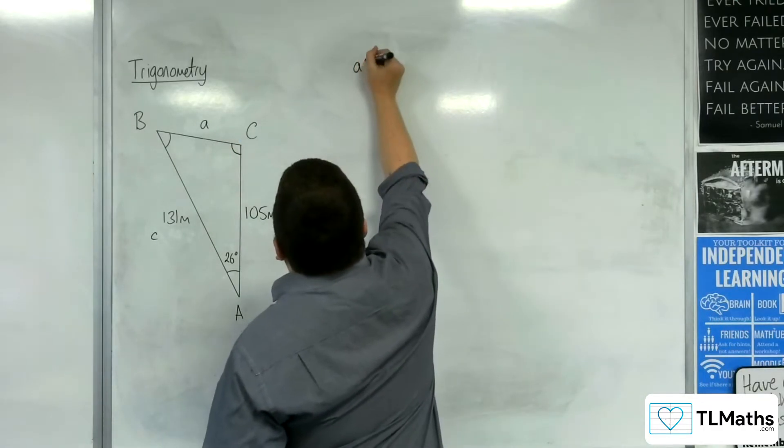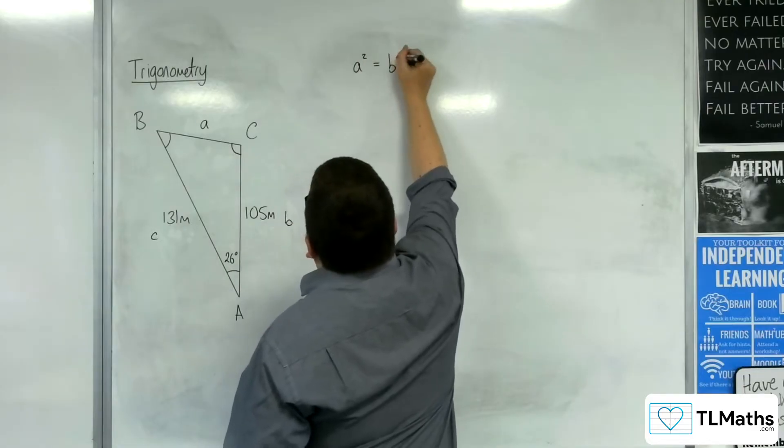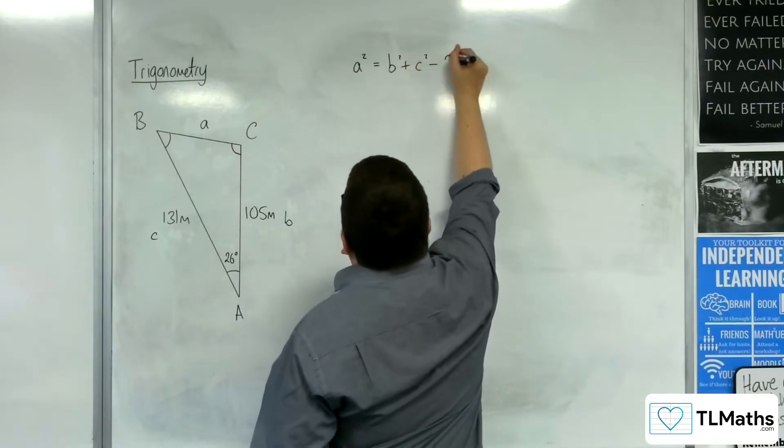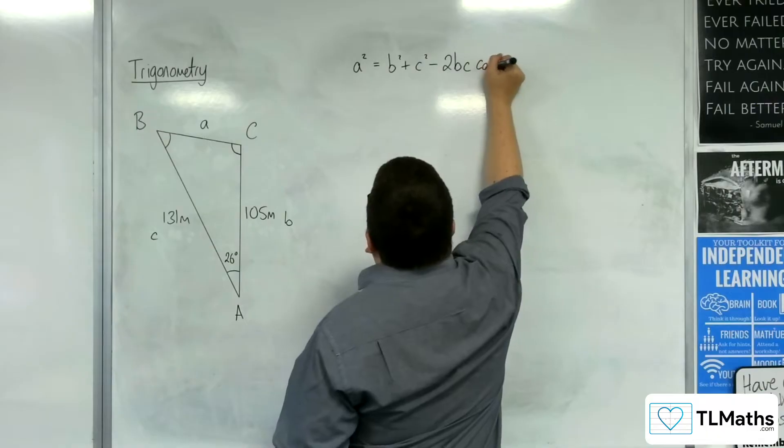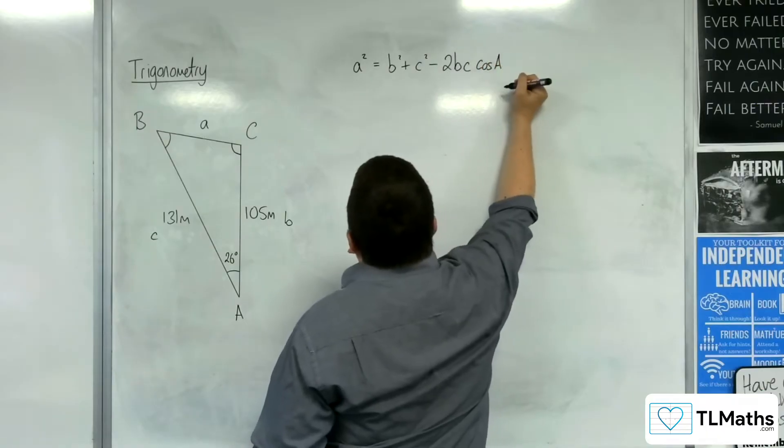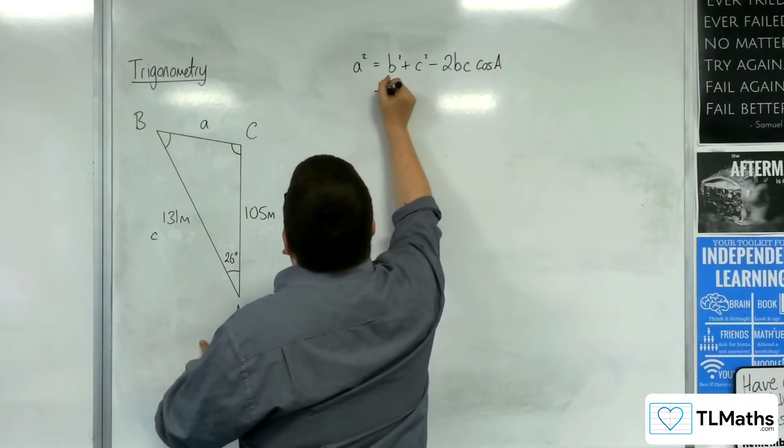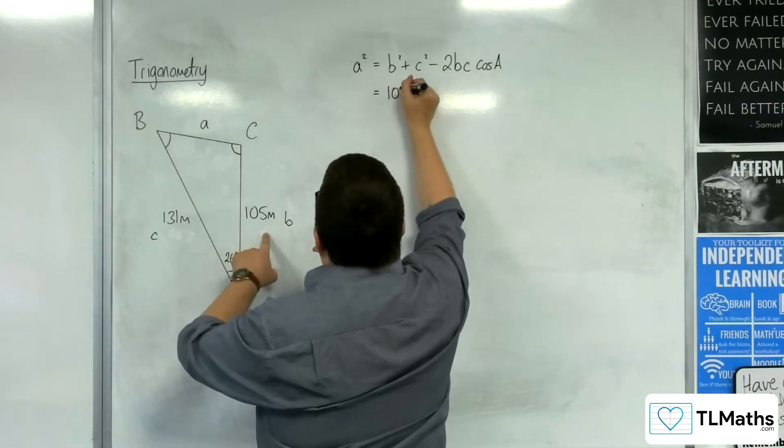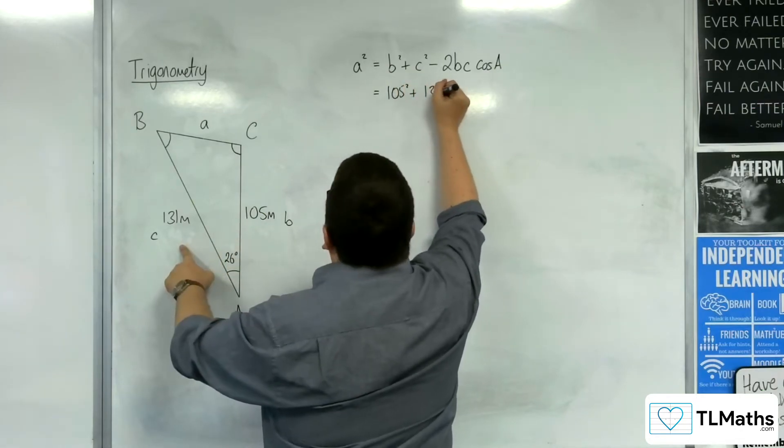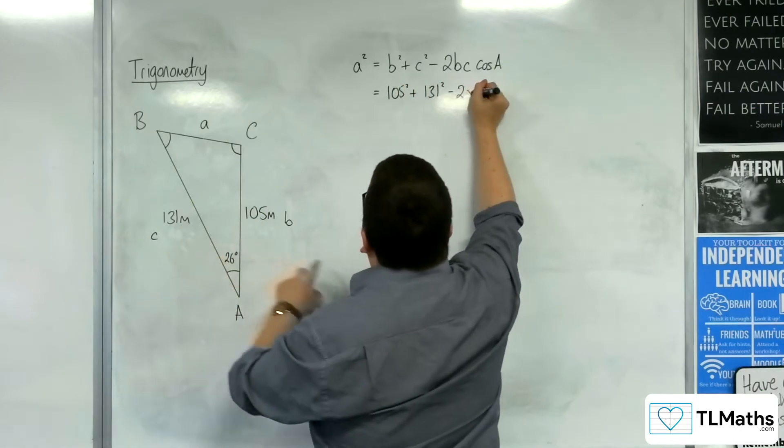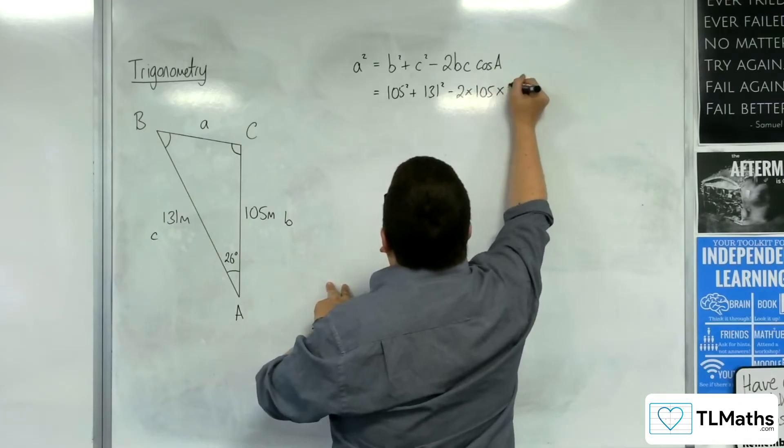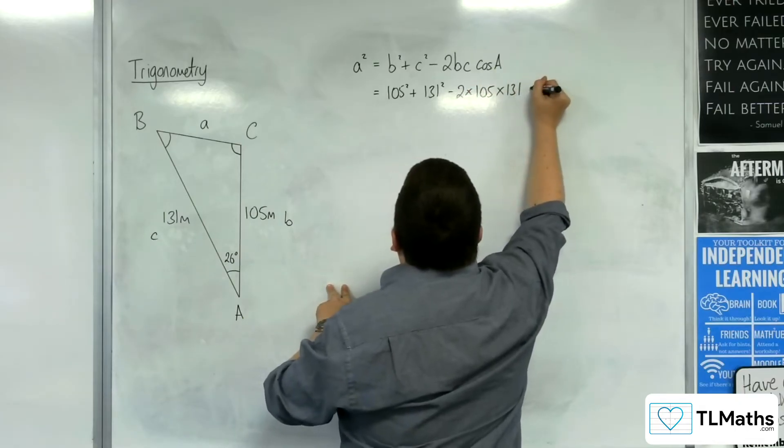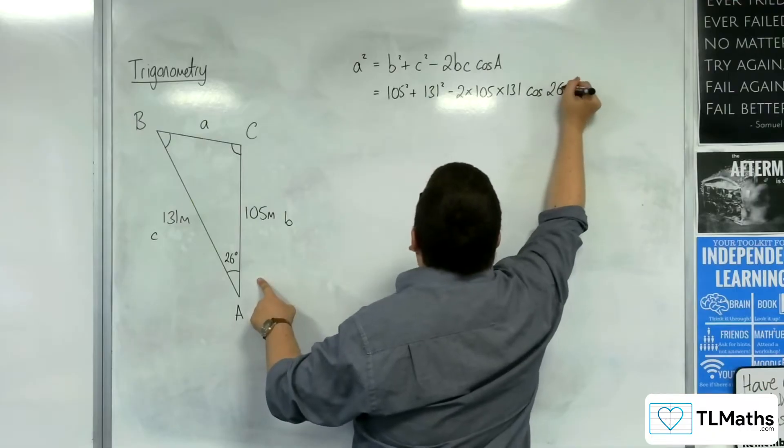So, the cosine rule, a squared is equal to b squared plus c squared, take 2bc cosine a. So, a squared is equal to 105 squared plus 131 squared, take away two lots of 105 times 131, cosine of 26 degrees.